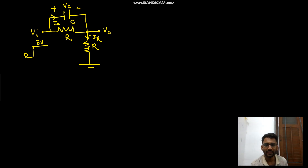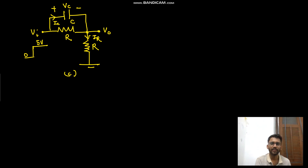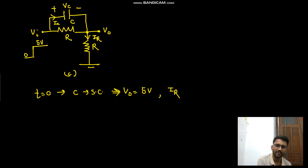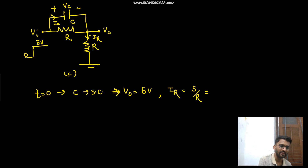We will analyze circuit C from our question, where we need to find ic, ir, and v_node. At t=0, the capacitor is short-circuited, so v_node equals vin, which is 5 volts. Since the capacitor is short-circuited, ir equals 5/R, and ic equals ir.